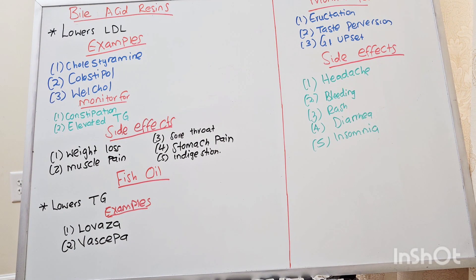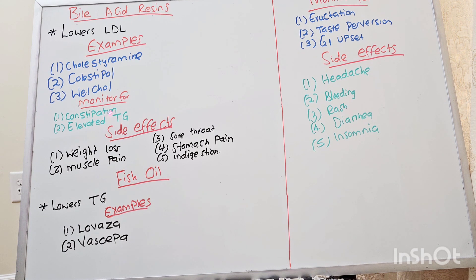Let's discuss bile acid resins. They lower LDL. Examples are cholestyramine, cholestipol, and WelChol. We should monitor for constipation and elevated triglycerides. Side effects are weight loss, muscle pain, sore throat, stomach pain, and indigestion.